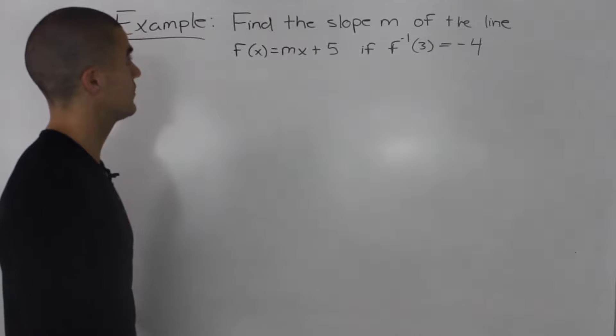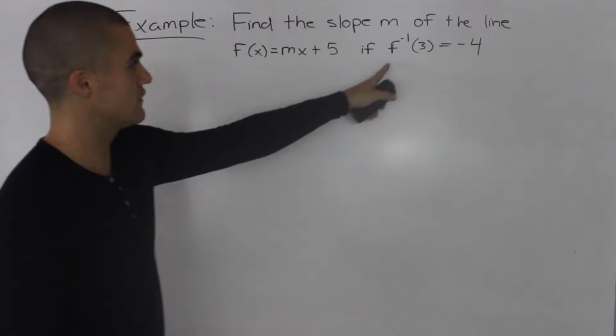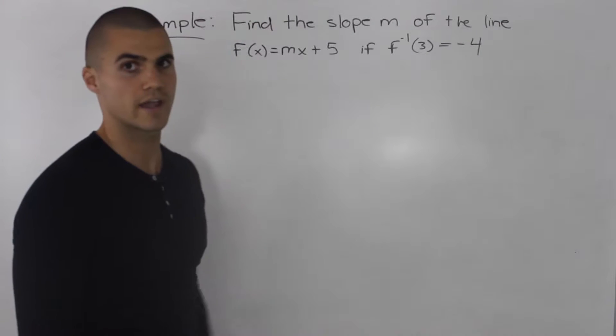What's up guys. Moving on to the next example, we have to find the slope m of the line f(x) = mx + 5 if f inverse of 3 equals negative 4.